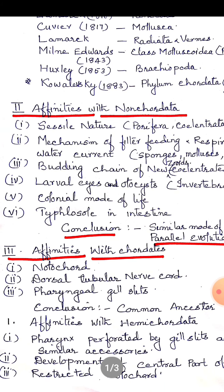Next is affinities with the chordates. The three basic chordate characteristics found in urochordates are: a rod-like notochord forming the axial skeleton of the tail, a dorsal tubular nerve cord, and gill slits in the pharyngeal wall. In conclusion, this is probably because both urochordates and other chordates originate from a common ancestor.